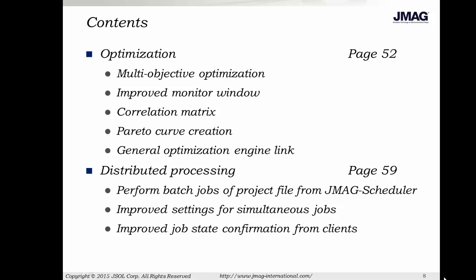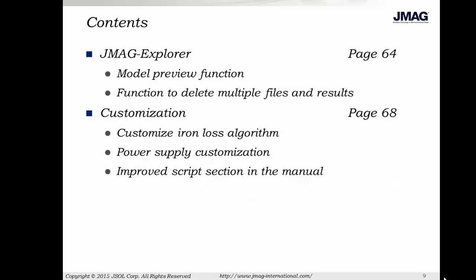It is also a lot easier to set simultaneous jobs and confirm the job state from the client machine. With all the data being generated, we've made some improvements to JMAG Explorer. JMAG Explorer allows you to preview a model and quickly delete multiple files and results from your computer. We've been making many improvements in our iron loss tool, but you can also create your own iron loss expression and apply it to the model. Power supply customization has also been improved. And since the number of customers using scripts has increased, we've improved the script section in our user manual.